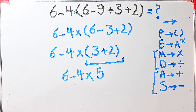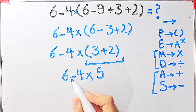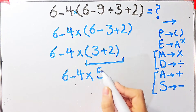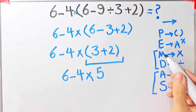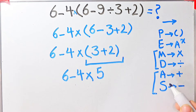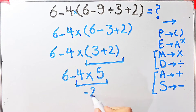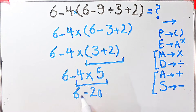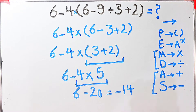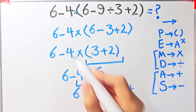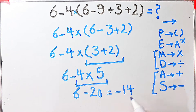In this step we have subtraction and multiplication. First we simplify the multiplication because multiplication has higher priority than subtraction. Four times five equals twenty, so we have six minus twenty, and the final answer of this question equals negative fourteen.